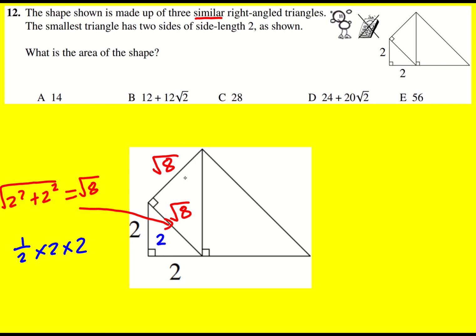And maybe I'll work out the area of this one while I'm at it. So it's going to be a half times root 8 times root 8 which is going to be a half times 8. So I'm going to get 4 for the area of this triangle.